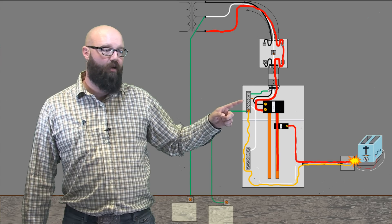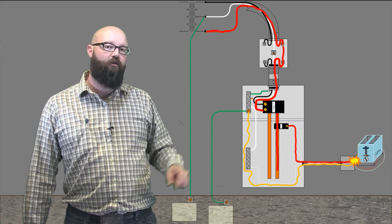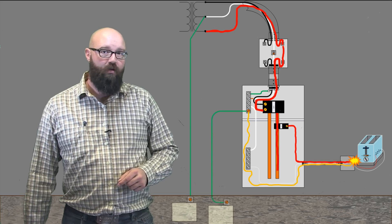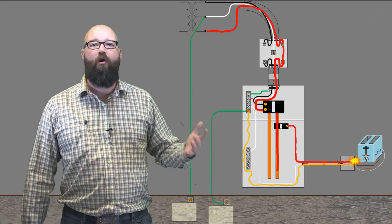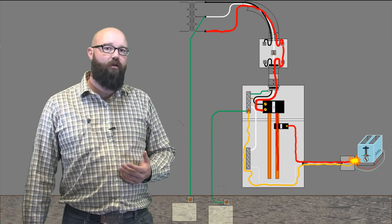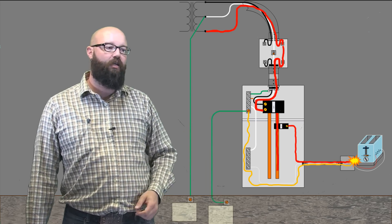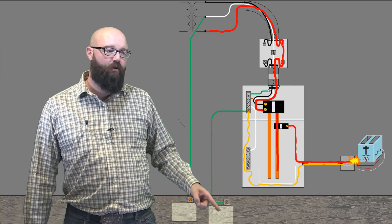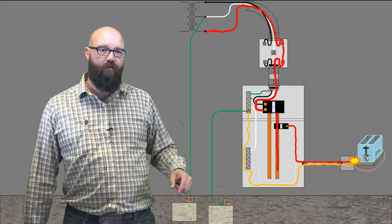Now remember, we lost the neutral conductor. But we do have this little green conductor here. We call that our service raceway bonding jumper. The intent of this is obviously to bond the service raceway. But it also gives us a backup path in a situation like this where we lose the neutral. That fault current still has a place to go.